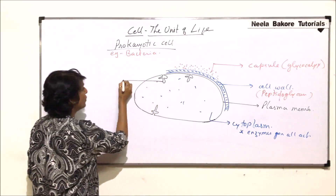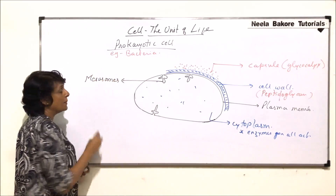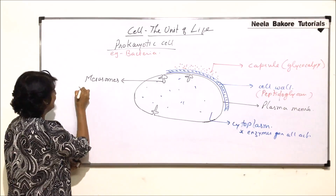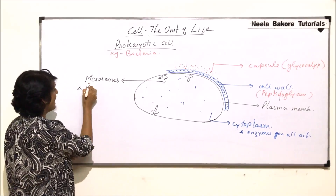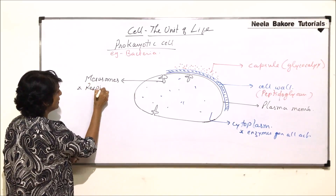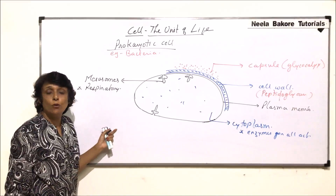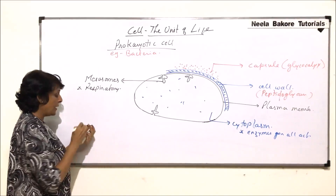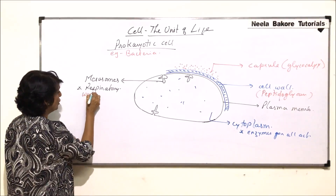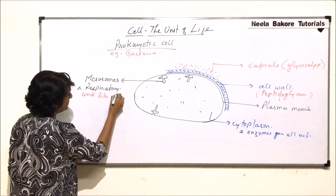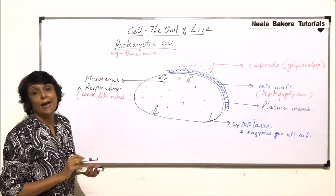These infolds are known as mesosomes. These membranes have enzymes for respiration, so they have a respiratory function — in the sense of breakdown to release energy. So mesosomes work like the mitochondria of eukaryotic cells.